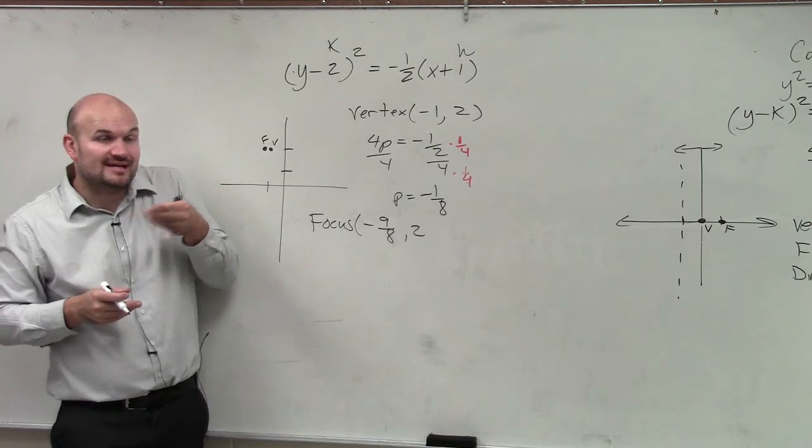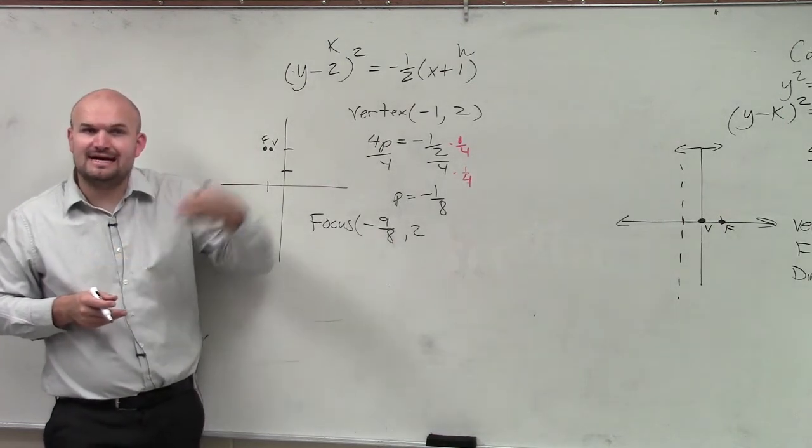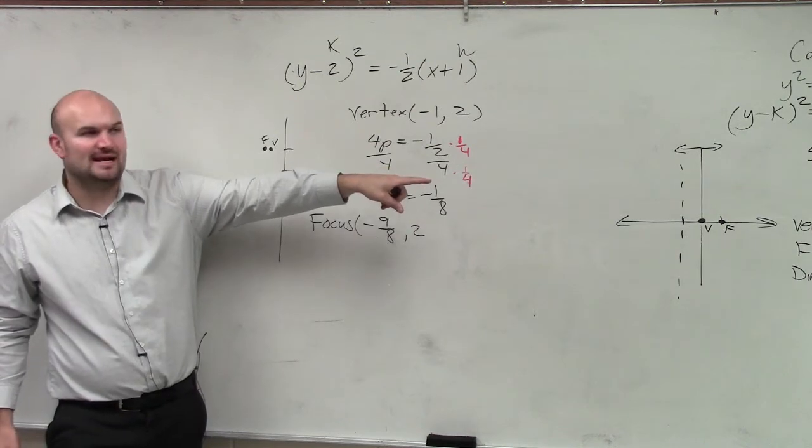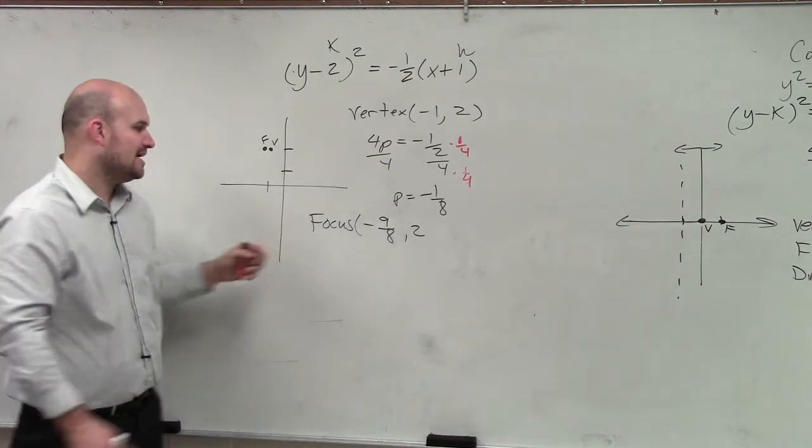So if my directrix, then, has to be 1 8 in the opposite direction, what would h minus negative 1 8 be? h plus 1 8. So you're going over to the right.